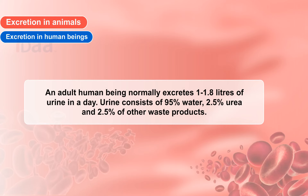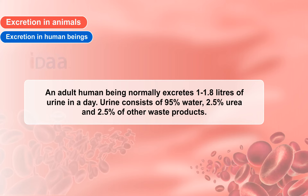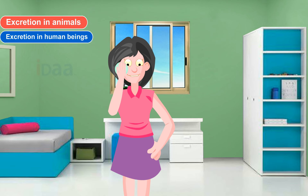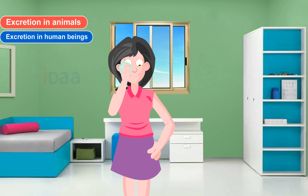An adult human being normally excretes 1 to 1.8 litres of urine in a day. Urine consists of 95% water, 2.5% urea, and 2.5% other waste products. Wastes from our body are also excreted in the form of sweat, which helps keep our body clean.